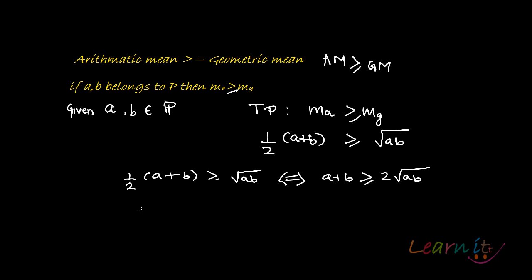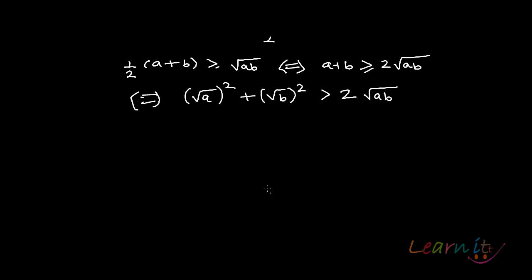So what we can now probably do is just break a and b. Now a and b are essentially square of, a is a square of root a, b is a square of root b. Am I making sense? So a is a square of root a, b is a square of root b, and it is greater than 2 root ab.